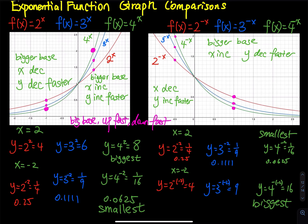Now for negative x — f(x) = b^(-x). Same color coding: 2 is red, 3 is blue, 4 is green. When x equals 1, the green curve has the lowest y value. When x equals negative 0.5, the green curve has the largest y value. So for the negative x functions, when x decreases, the bigger base's y increases fastest. When x increases in the positive direction, y decreases faster for the bigger base.